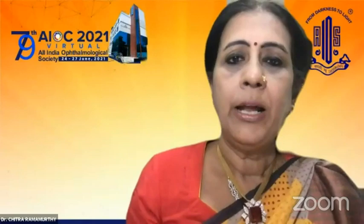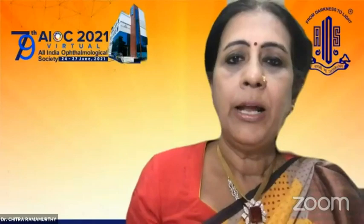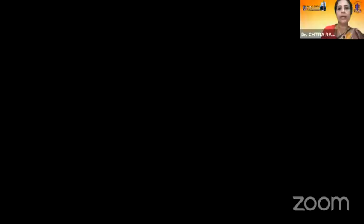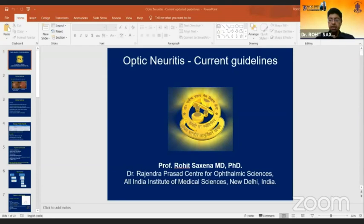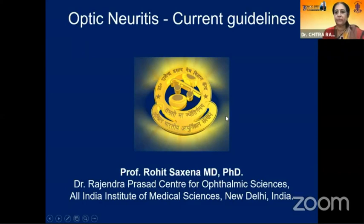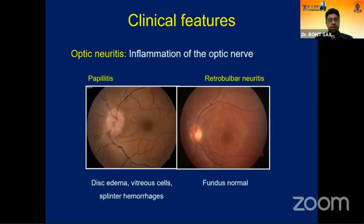We now move to the neuro-ophthalmology section. Dr. Rohit Saxena will speak on current updated guidelines of optic neuritis. Optic neuritis is inflammation of the optic nerve, presenting as papillitis or retrobulbar neuritis. Rarely, associated neuroretinitis can be seen, but it is not typically part of demyelinating optic neuritis. We focus on demyelinating or potentially demyelinating optic neuritis: typically uniocular, affecting those aged 20-50, with some pain along with visual loss over hours to days.